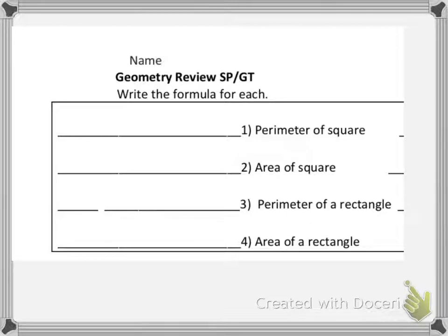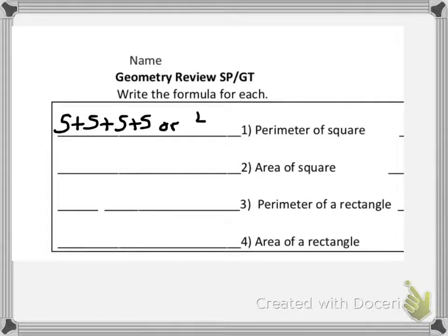We're going to start with number 1, to find the perimeter of a square. We can add up the 4 sides — side plus side plus side plus side — or that's the same thing as multiplying the side length times 4, so 4s.